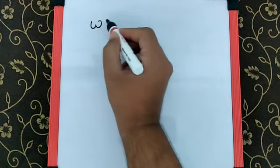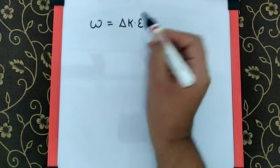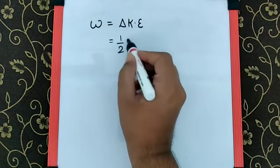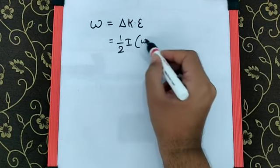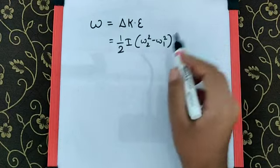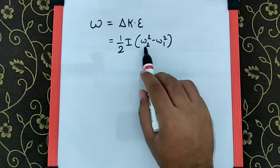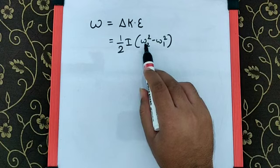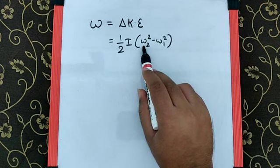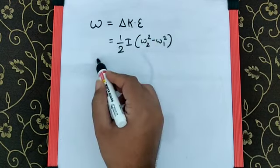By the work-energy principle, work done equals the change in kinetic energy: 1/2 I(ω₂² - ω₁²). The initial angular speed is the same for all objects, and they all stop, so ω is constant. Since 1/2 is also constant,